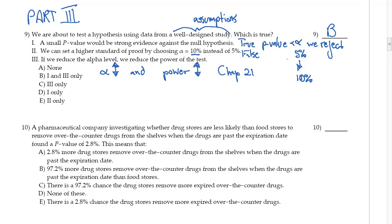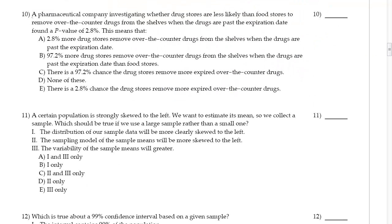Now on to 10. A pharmaceutical company investigating whether drug stores are less likely than food stores to remove over-the-counter drugs from the shelves when the drugs are past the expiration date found a p-value of 2.8. Now remember, a p-value of 2.8 means that if I've got my little normal curve here, right...